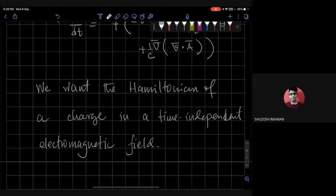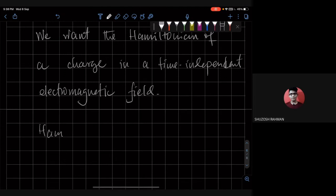Why do we want the Hamiltonian? Because the Hamiltonian gives us the Schrodinger equation.